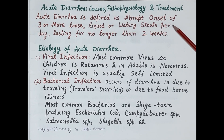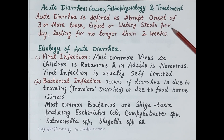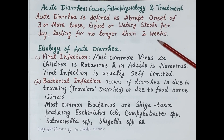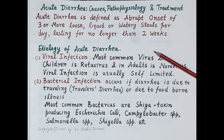Acute diarrhea is defined as abrupt onset — that is, sudden onset — of three or more loose, liquid, or watery stools per day, lasting for no longer than two weeks. It is important to note that acute diarrhea lasts for less than two weeks. If diarrhea lasts for two to four weeks it is termed persistent diarrhea, and chronic diarrhea lasts longer than four weeks.